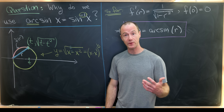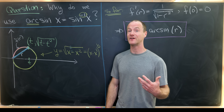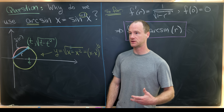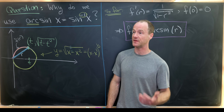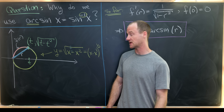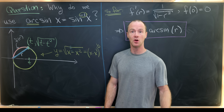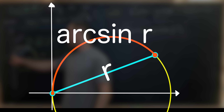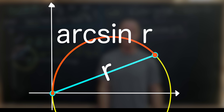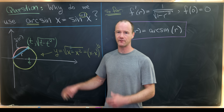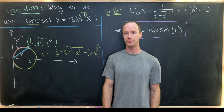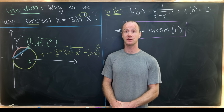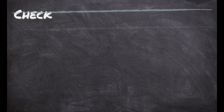So why do we use the prefix 'arc' to define the inverse sine function? It's because the arcsine of r is literally the length of an arc in this geometric setup — the arc along a specific unit circle from the origin to the point at distance r. And that's a good place to stop.